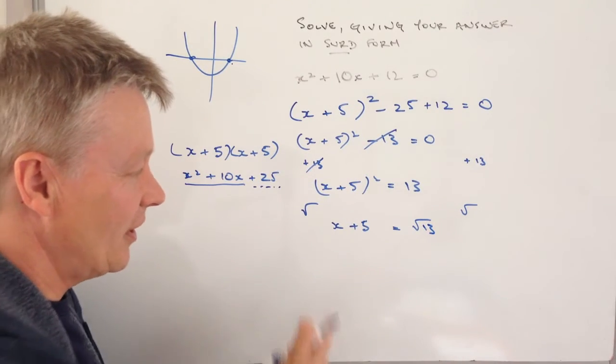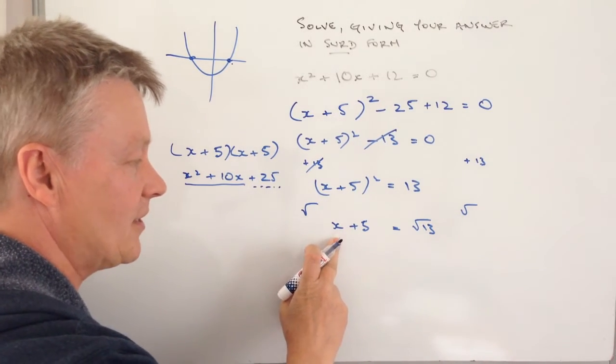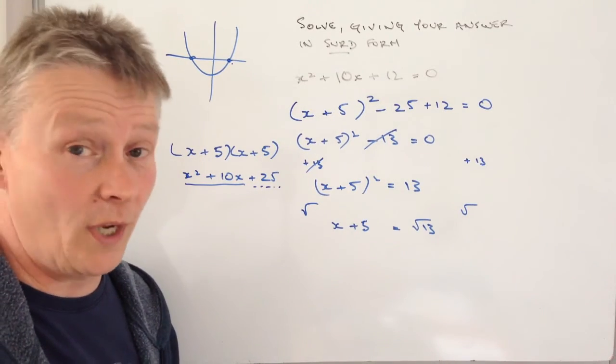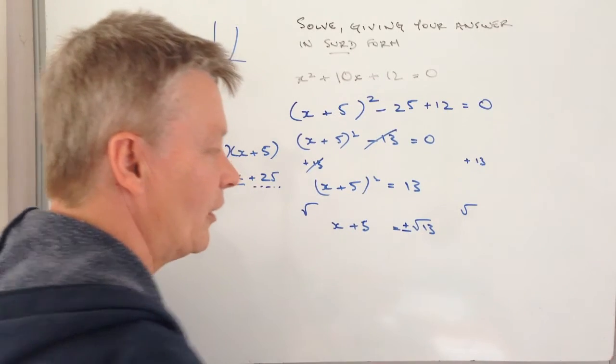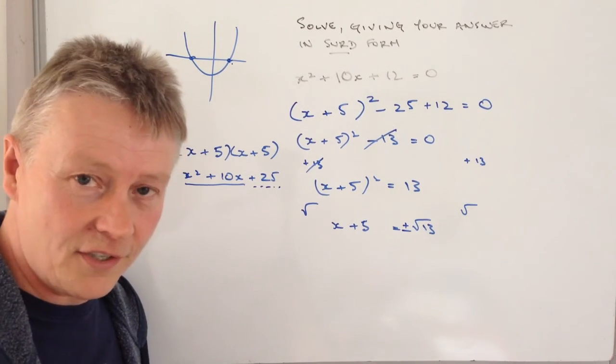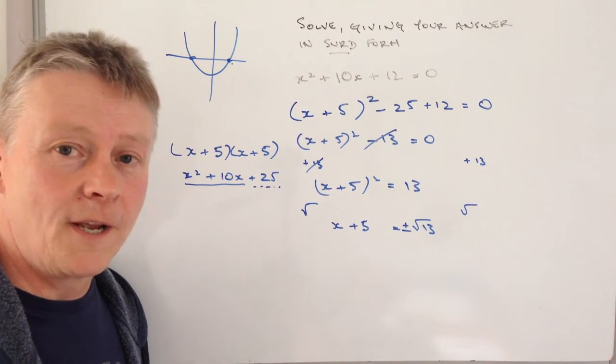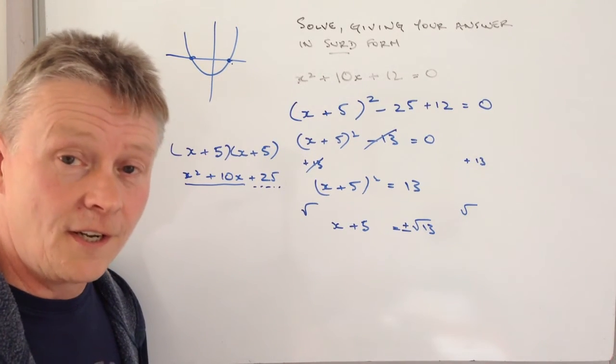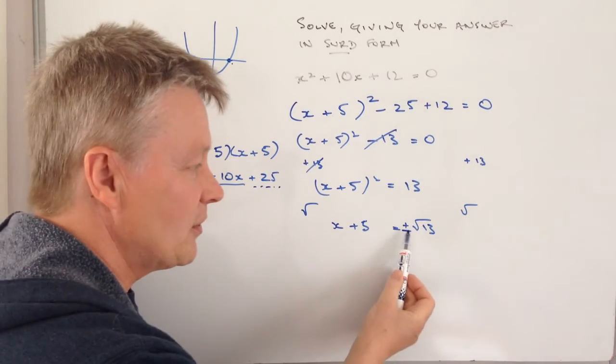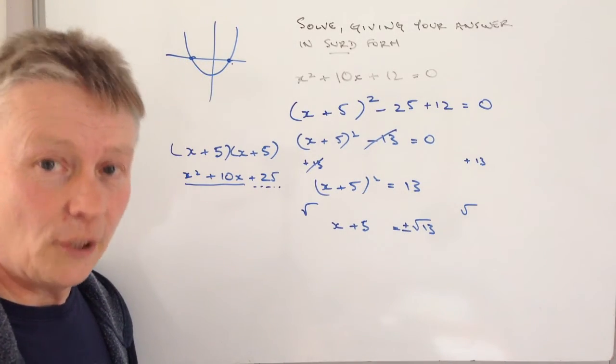I've got x plus 5 equals square root of 13. Remember that the square root can be either positive or negative. If you imagine something like 36, square root of 36 can be plus 6 times plus 6 or minus 6 times minus 6. So square roots are always positive or negative.